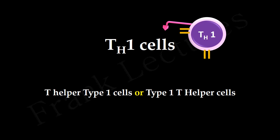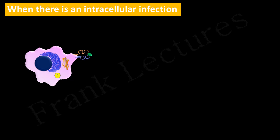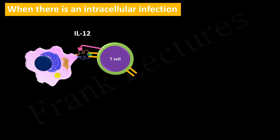T helper type 1 cells. When there is an intracellular infection such as viral or intracellular bacterial infection, the dendritic cells and macrophages secrete interleukin-12. The dendritic cell migrates from the site of infection to a nearby lymph node, where it presents the antigen to a naive CD4 positive T cell. Once antigen is recognized, interleukin-12 induces this T cell to become a T helper type 1 cell.